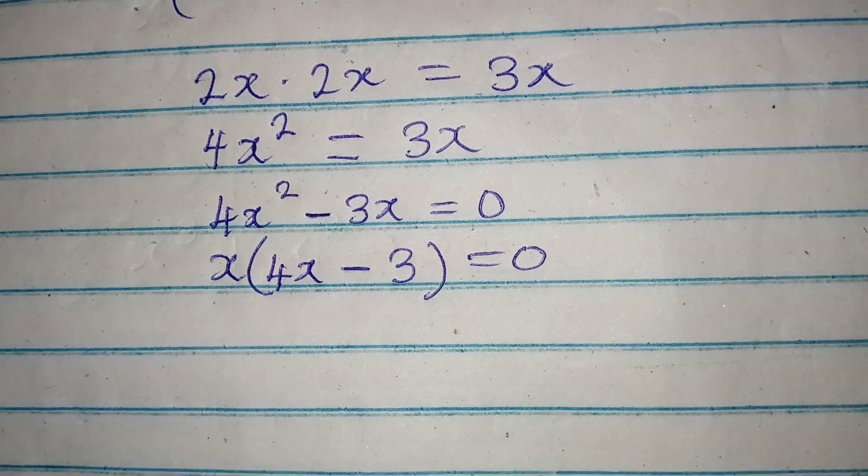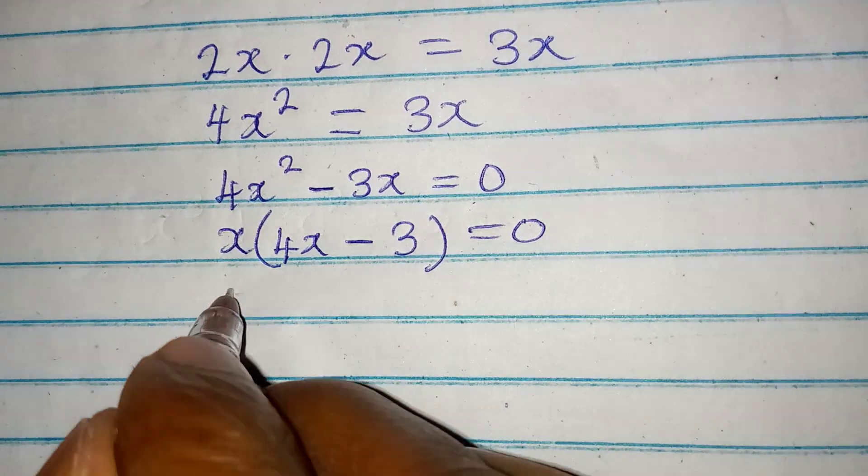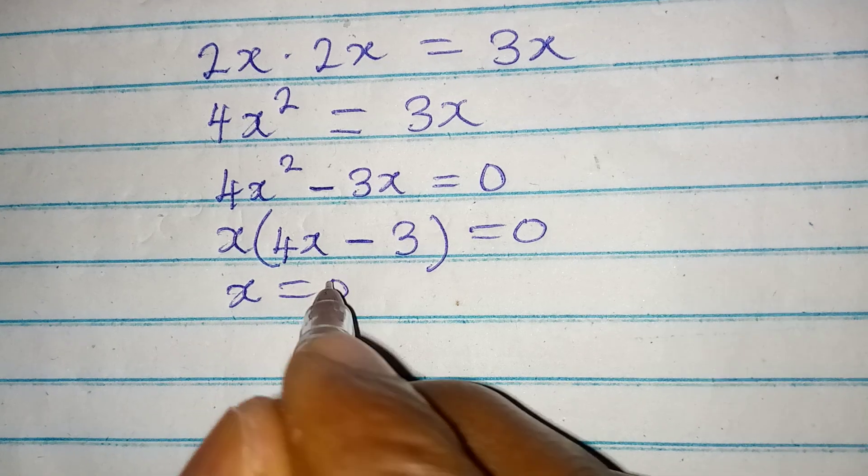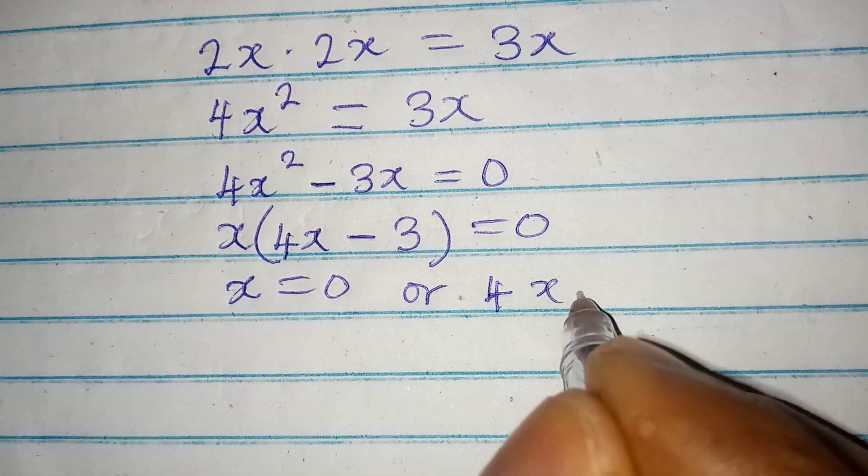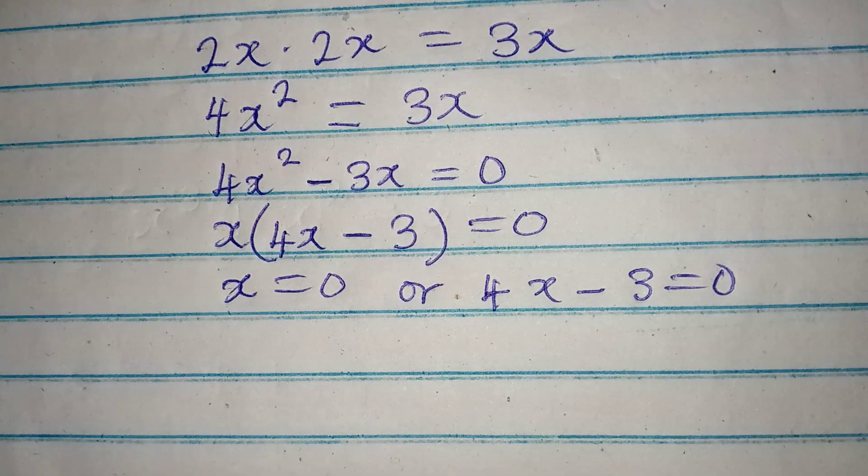Now we say that it is either x is equal to 0, or 4x - 3 is equal to 0.